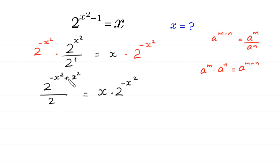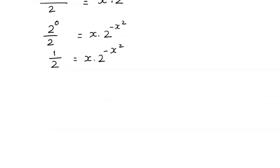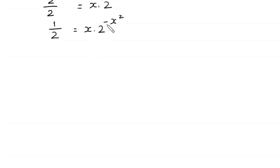According to the exponent property a^m times a^n equals a^(m+n), we get 2 to the power negative x squared plus x squared, which is 2 to the power 0, divided by 2, is equal to x times 2 to the power negative x squared. Since 2 to the power 0 is 1, we get 1 over 2 equals x times 2 to the power negative x squared.